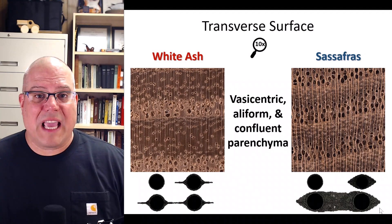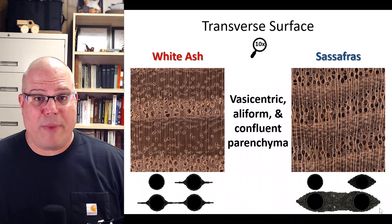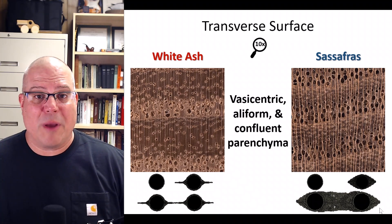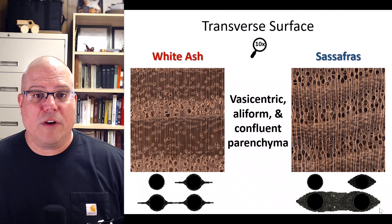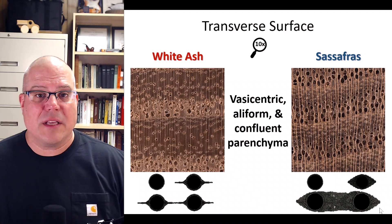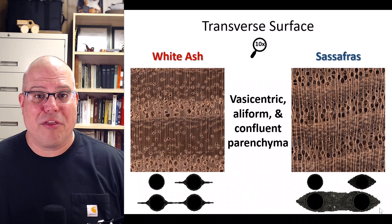Both woods can exhibit vasocentric, aliform, and confluent parenchyma patterns — the ring type, the wing type, and the connected type respectively. When you look for parenchyma in these images, you might notice that the rays and the confluent connections are thinner in the white ash and thicker in the sassafras.